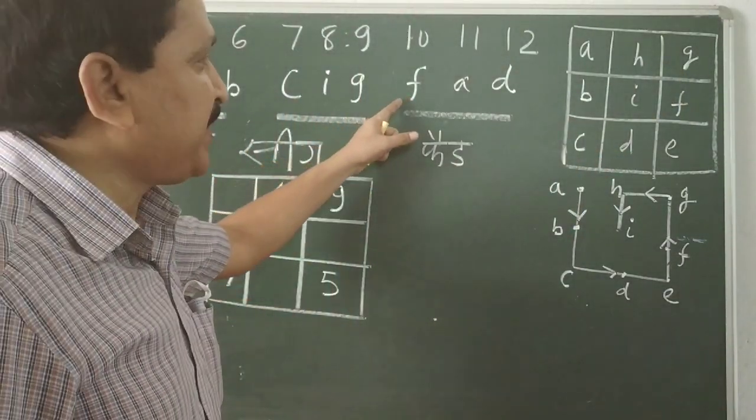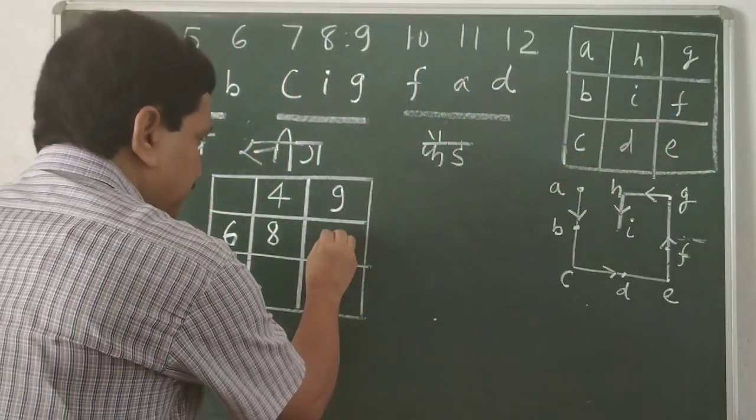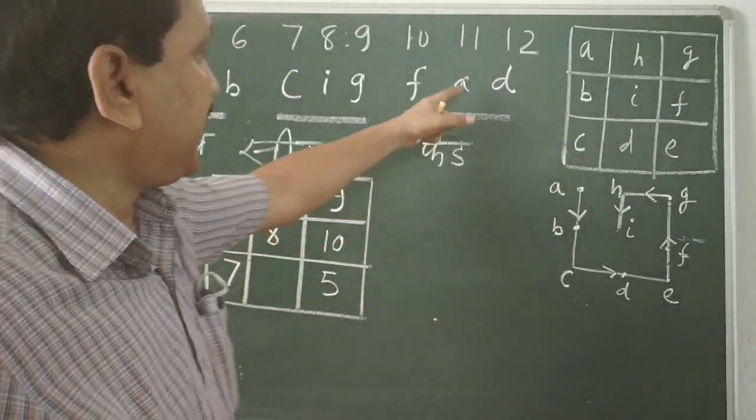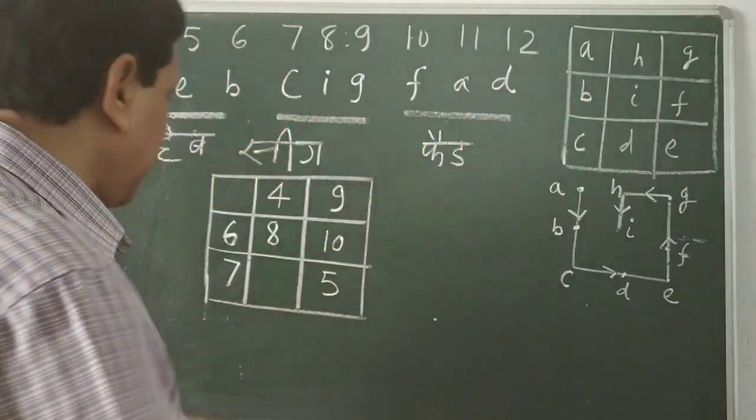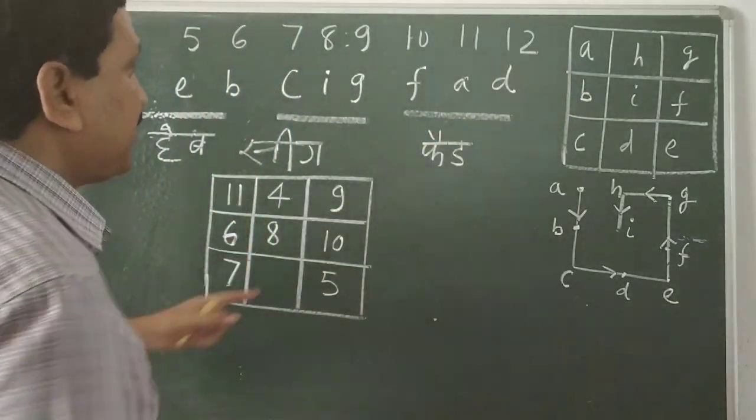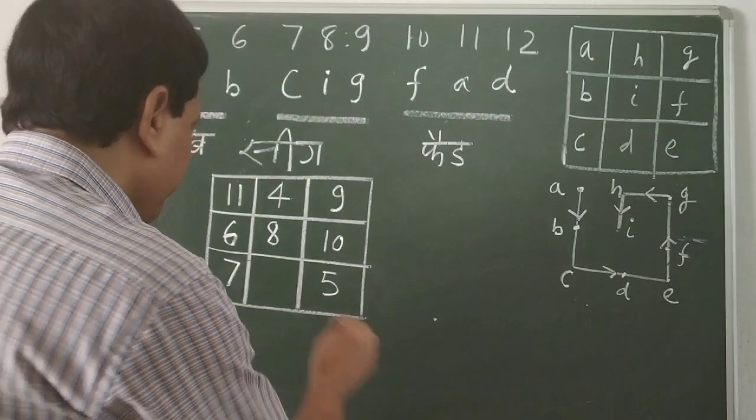f. f is 10. Here is 10. So write 10. a. a is 11. This is a. 11. And lastly the d is 12. So d is 12.